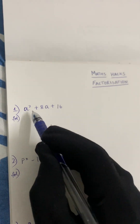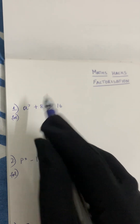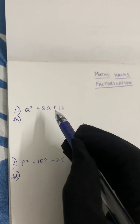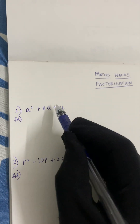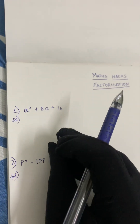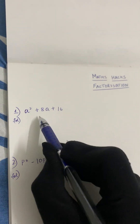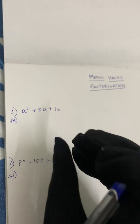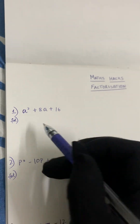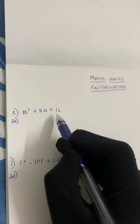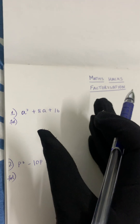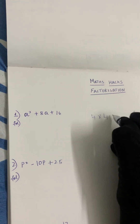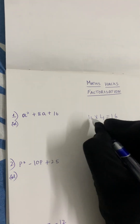The first step to solve this question is we have to assume any two numbers. If we multiply those two numbers we have to get 16, and if we add or subtract those two numbers we have to get 8. So let's think: what are the two numbers? Let's take 4, because 4 into 4 gives you 16.